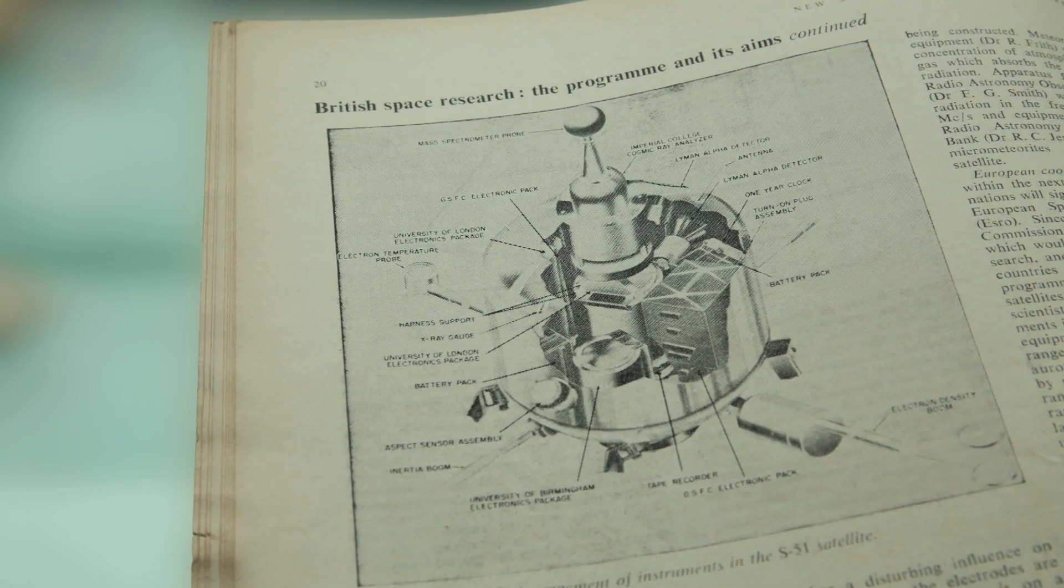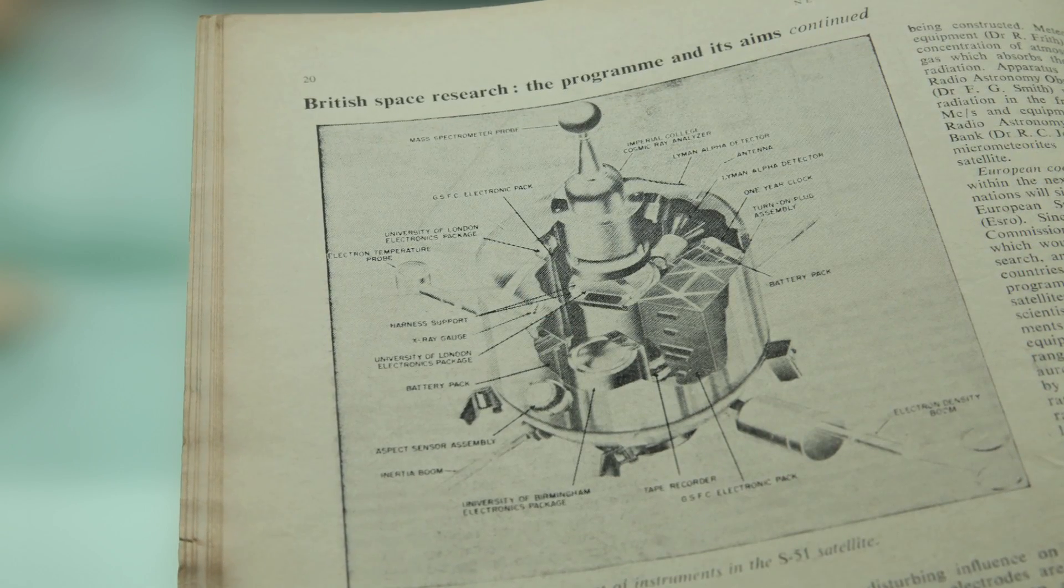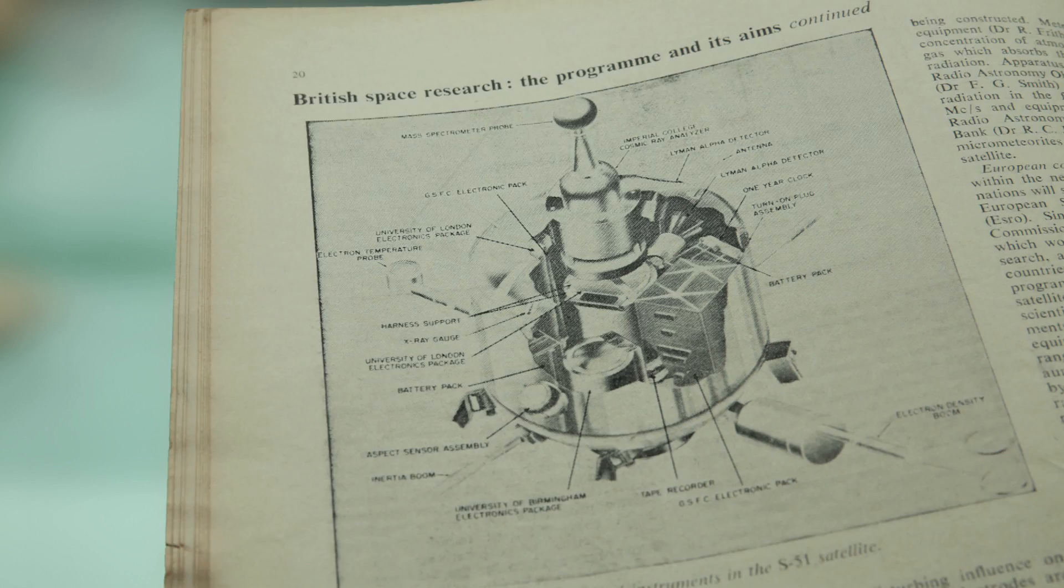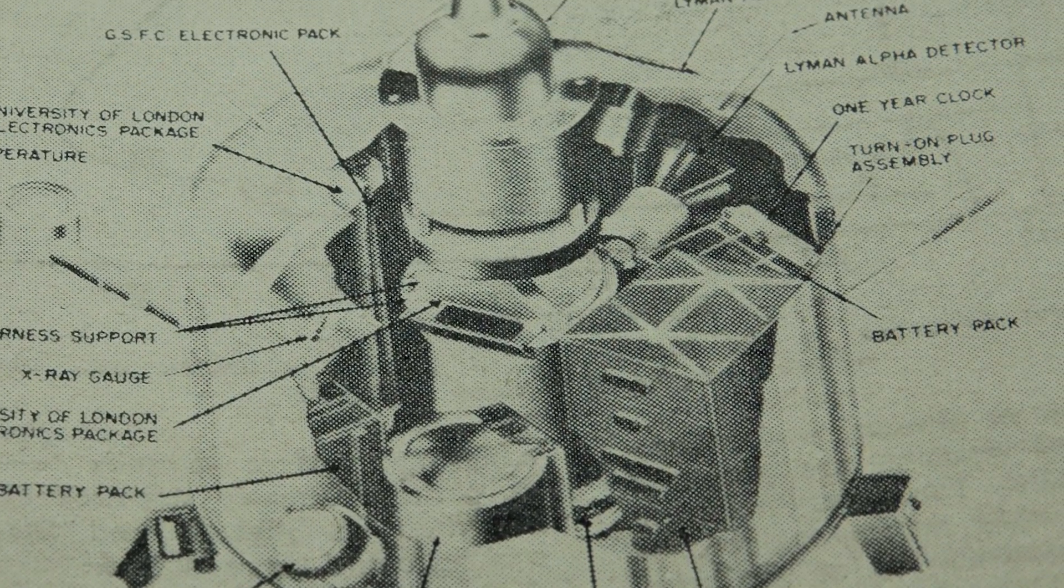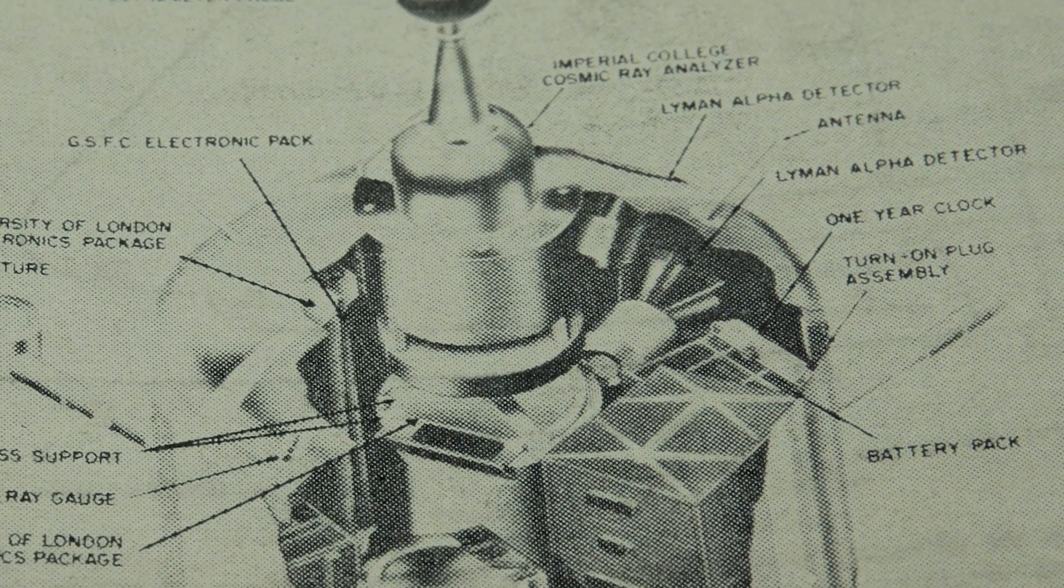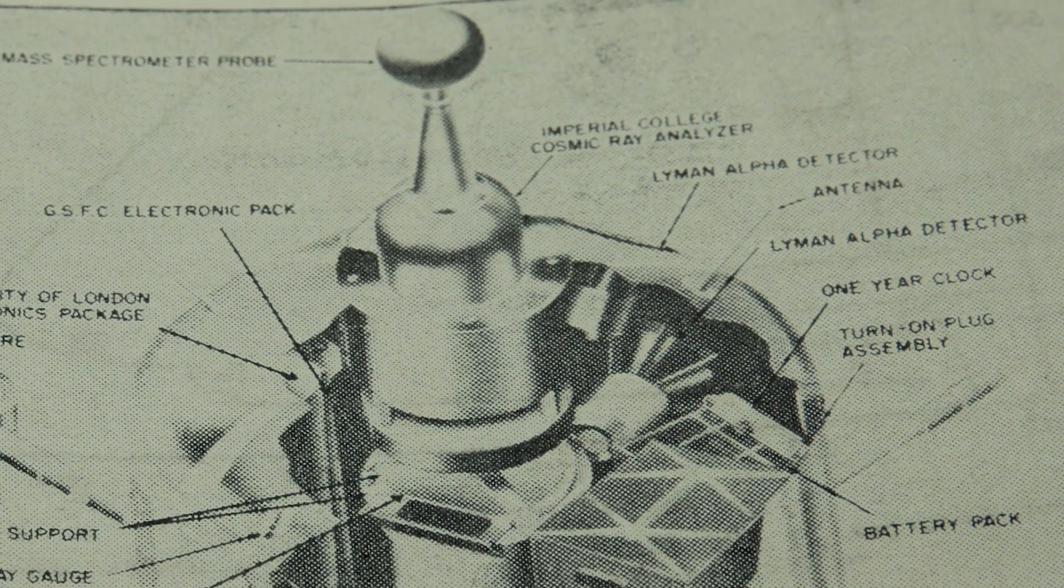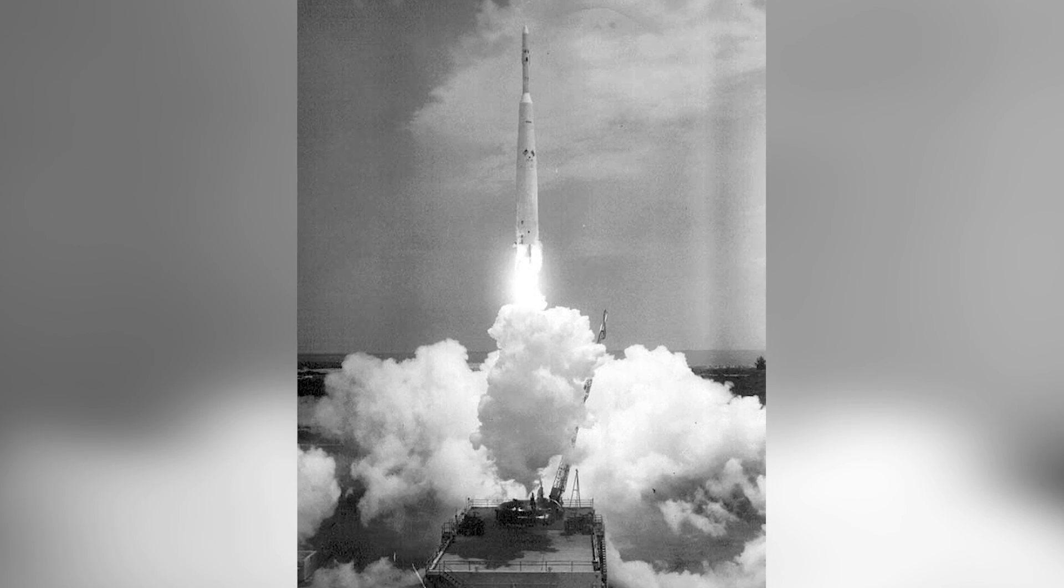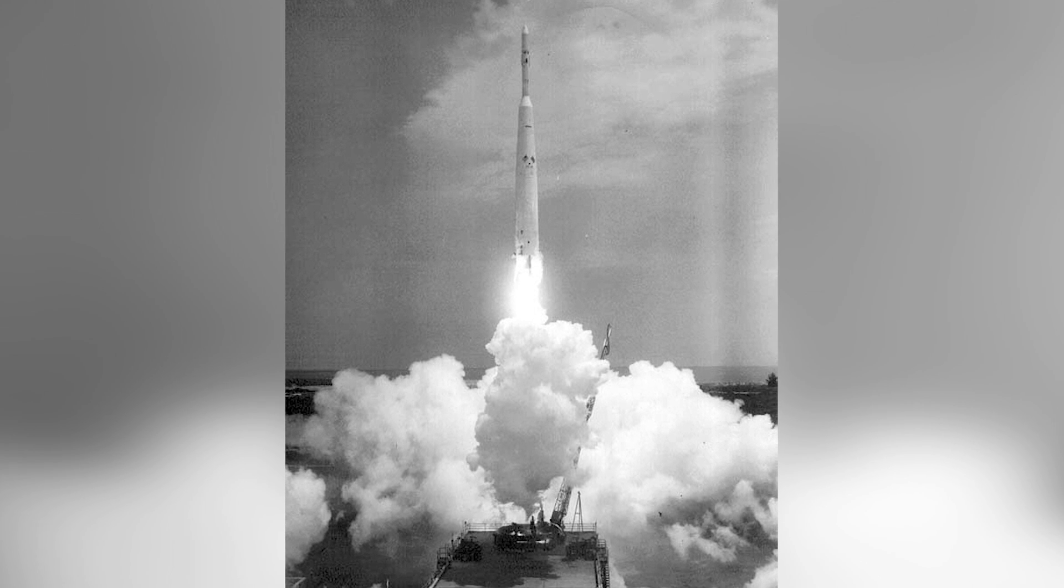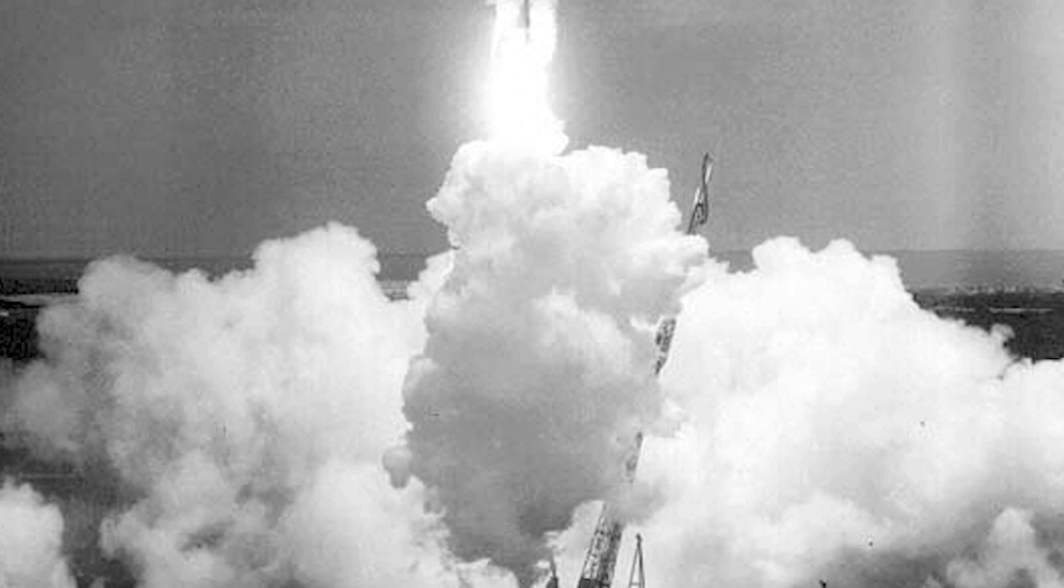So let's get back to the story of Ariel One. You call this Britain's first venture into space, but it's not an entirely British satellite, is it? It isn't. The Americans offered other nations the possibility of putting scientific experiments in space in the late 1950s. The British got on board and they provided six instrument packages for what was initially called the UK one and then Ariel one. So the Americans built the satellite infrastructure and they launched it on a Thor Delta rocket from Cape Canaveral.